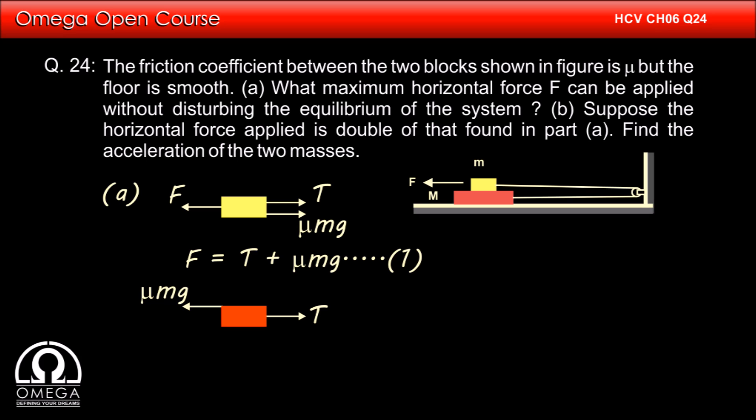Balancing the force in horizontal direction, we get T is equal to mu mg. Putting the value of T in equation 1, we get F is equal to mu mg plus mu mg, that is 2 mu mg. This is the answer to part A of the question.